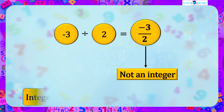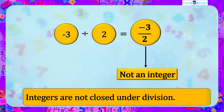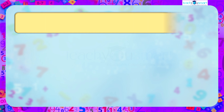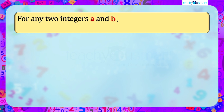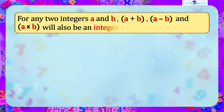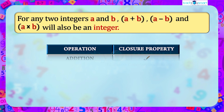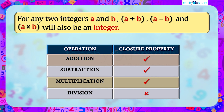That is, integers are closed under division. In general, for any two integers a and b: a + b, a − b, and a × b will also be an integer — that is, integers are closed under addition, subtraction, and multiplication, and not closed under division.